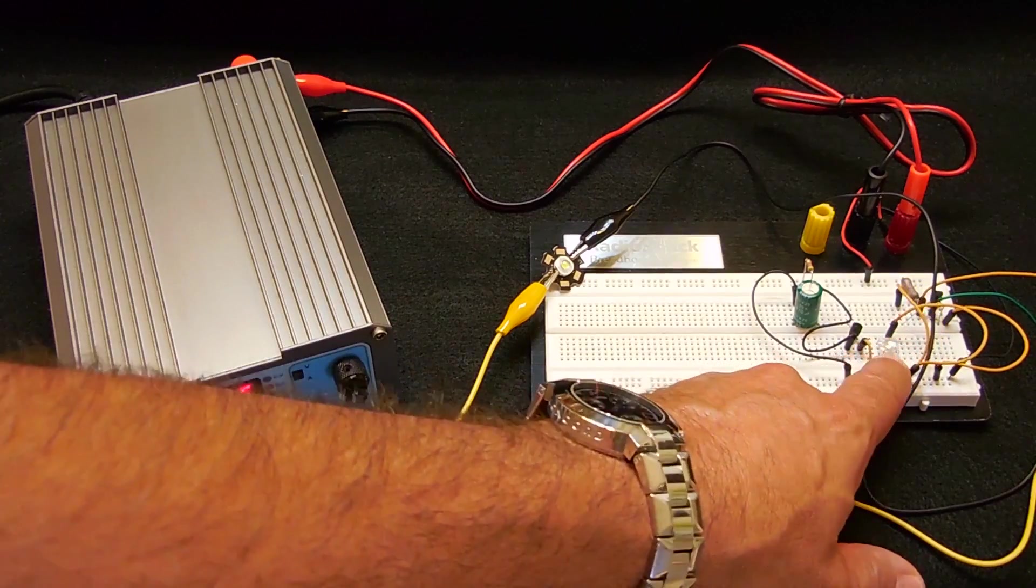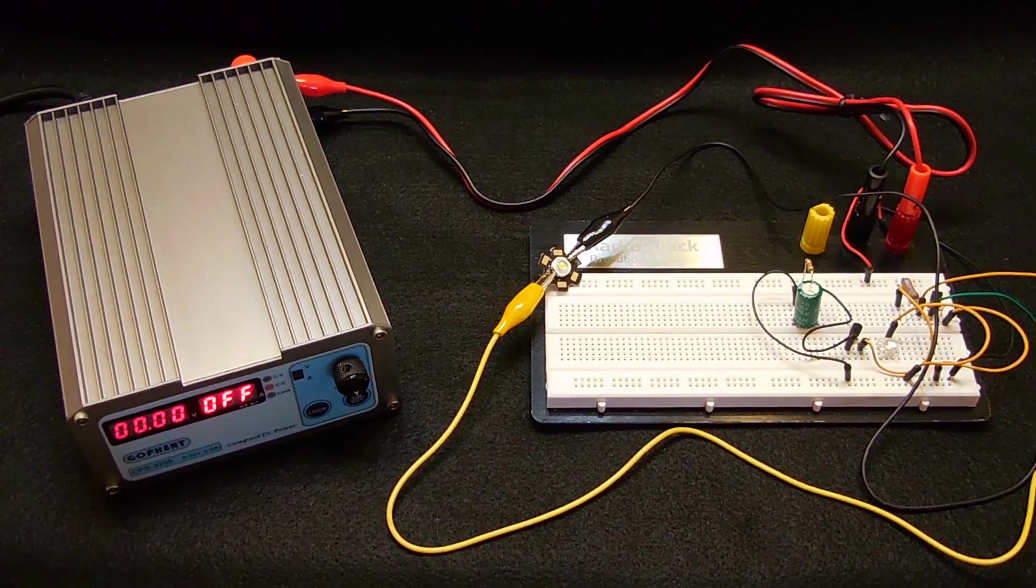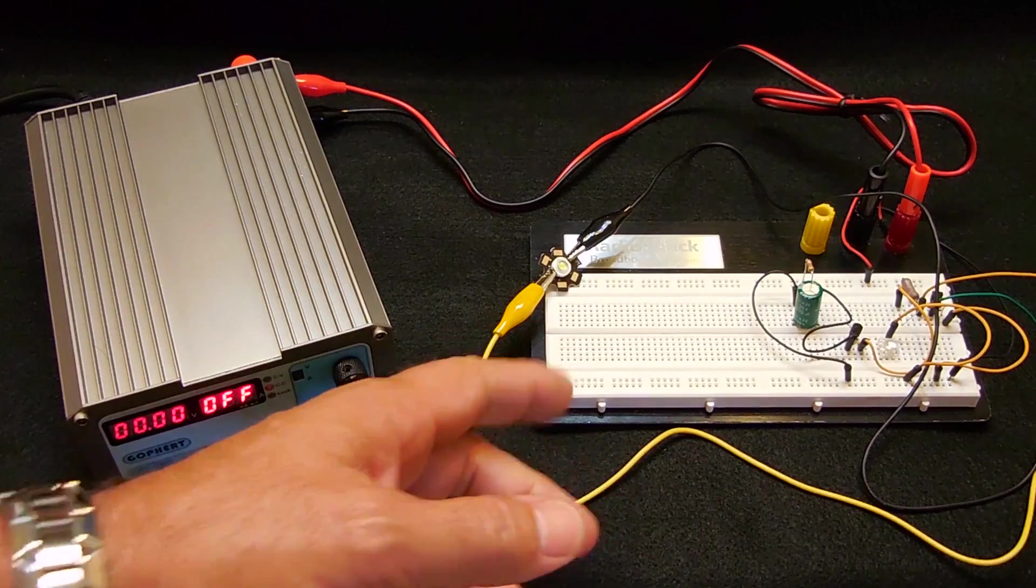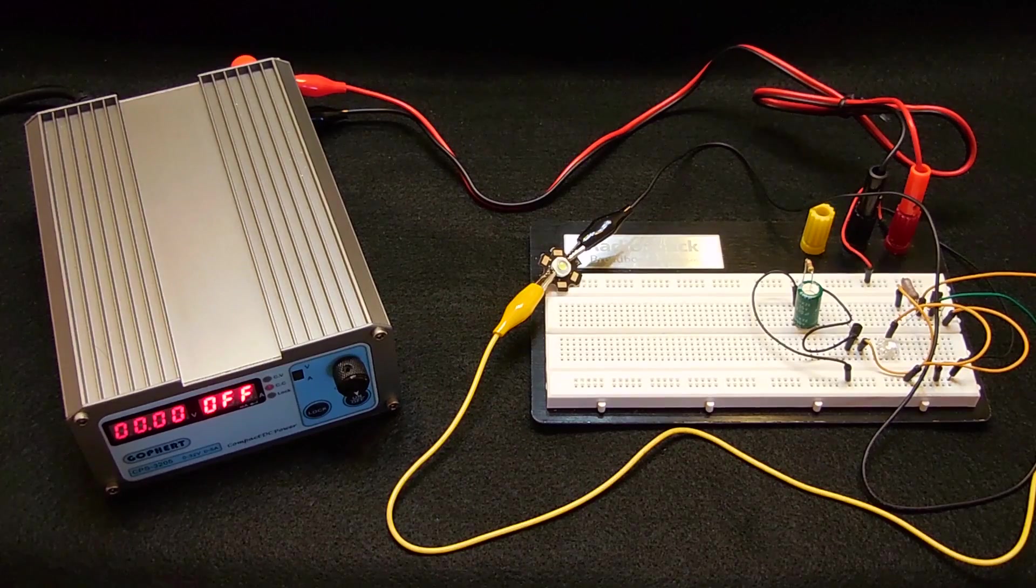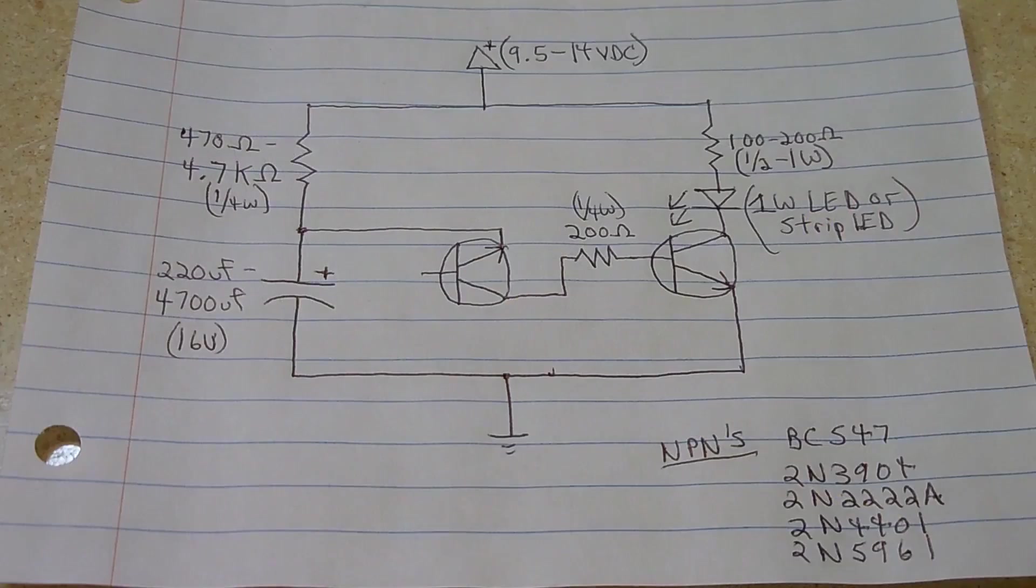Over here is a Piranha High Brightness LED. And over here is a 1 Watt Ultra Bright White LED. Before I show you a few different demonstrations, I first would like to go over the schematic, point out the components, the values, and explain exactly how the circuit works.